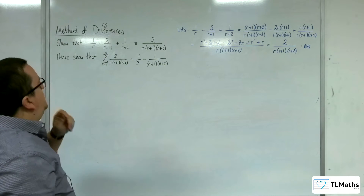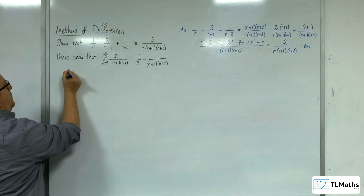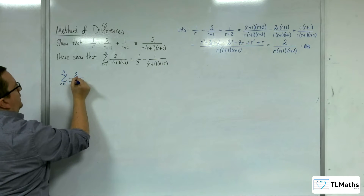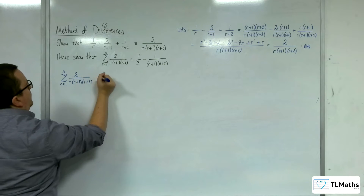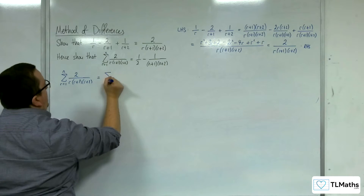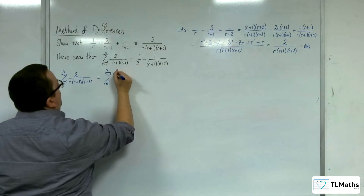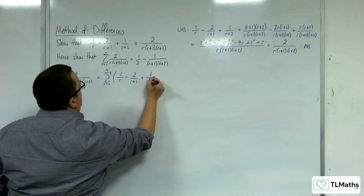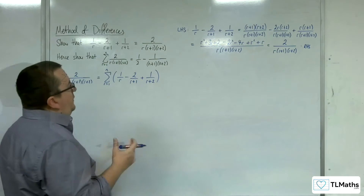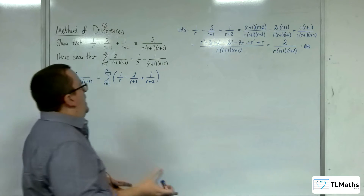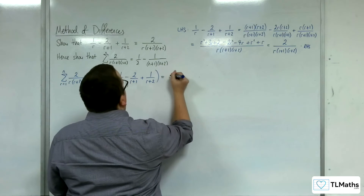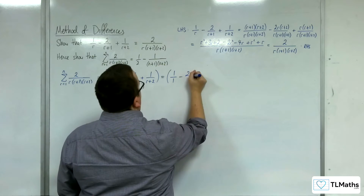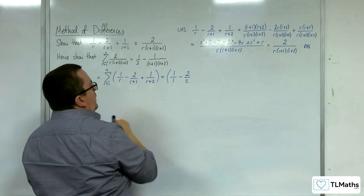Now that we've done that, we know that the sum from r equals 1 to n of 2 over r(r+1)(r+2) is the same as looking at the sum from r equals 1 to n of 1 over r, take away 2 over (r+1), plus 1 over (r+2). Let's start substituting in r equals 1 up to n. Substituting in 1 first, we're going to get 1 over 1, take away 2 over 2, plus 1 over 3.